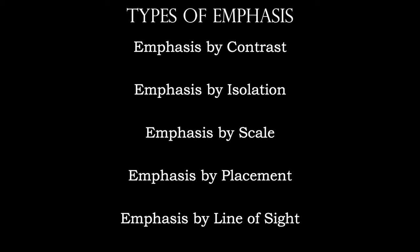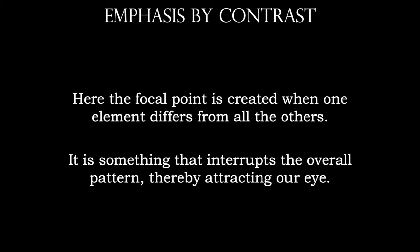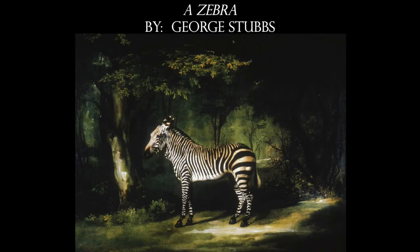Emphasis by contrast: here the focal point is created when one element differs from all of the others. It is something that interrupts the overall pattern, and therefore attracts our eye. So in this great woodland scene, we've got a lot of muted greens and a rich, lush background. But right in the center we have this very bold black-and-white pattern of this zebra, and it interrupts the entire flow of the landscape painting. This is emphasis by contrast.